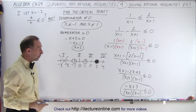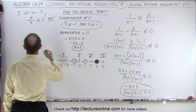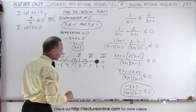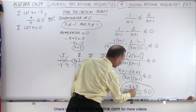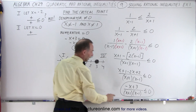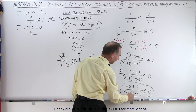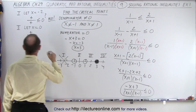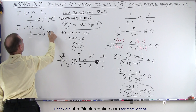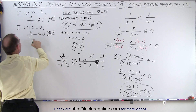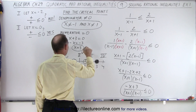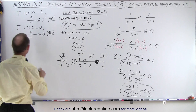For region two, let x equal zero. The numerator gives a positive number. In the denominator, zero plus one times zero minus one is positive one times negative one, which is negative. Is that less than or equal to zero? Yes — because one of them is negative the fraction is less than zero. So region two satisfies the inequality and is included.